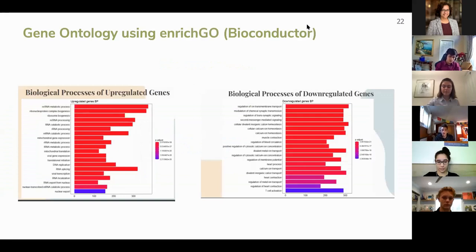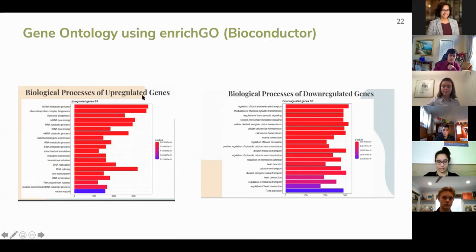Throughout the course of this bioinformatics pipeline, we used many different tools for functional analysis. The first was gene ontology using the EnrichGeo function in R, the programming language we used. Gene ontology uses a comprehensive model of biological systems to identify the top biological processes, cellular components, and cellular functions associated with certain genes. It is important to note that the imbalance between up-regulated and down-regulated genes — which Disha did talk about — helps shed light on the progression of the disease.